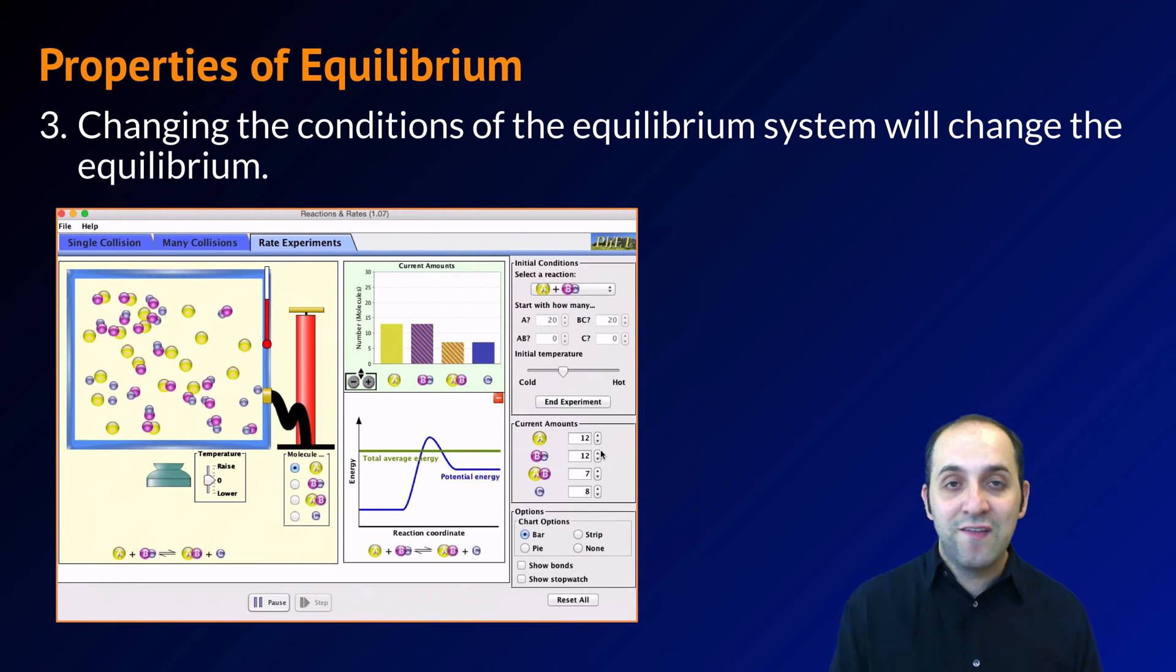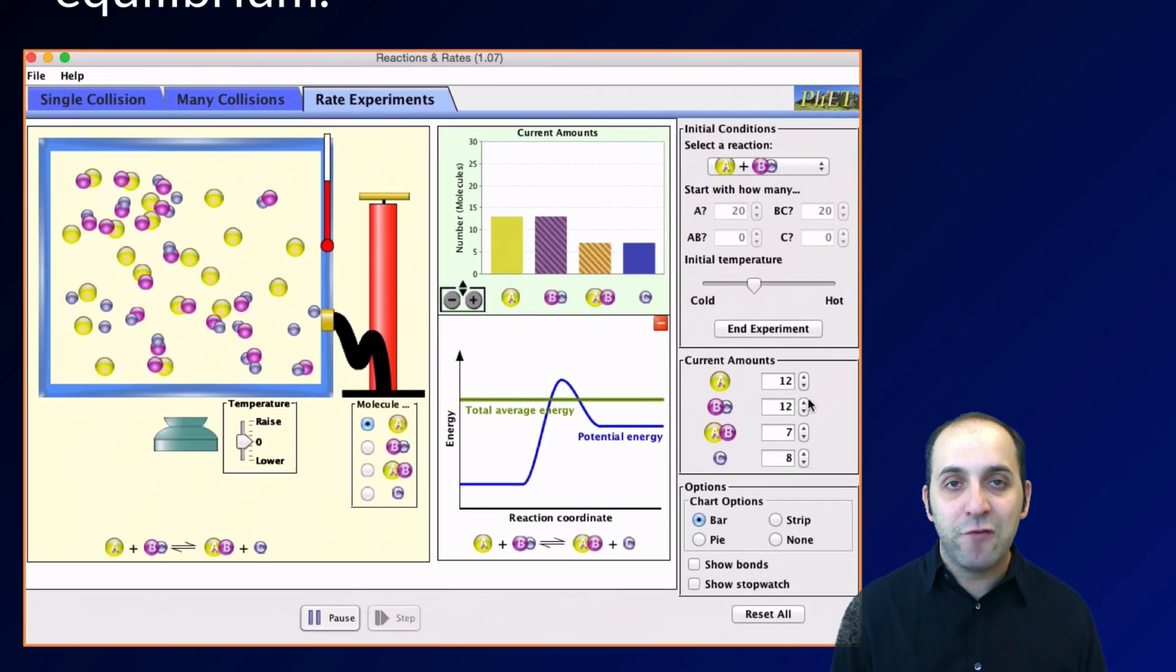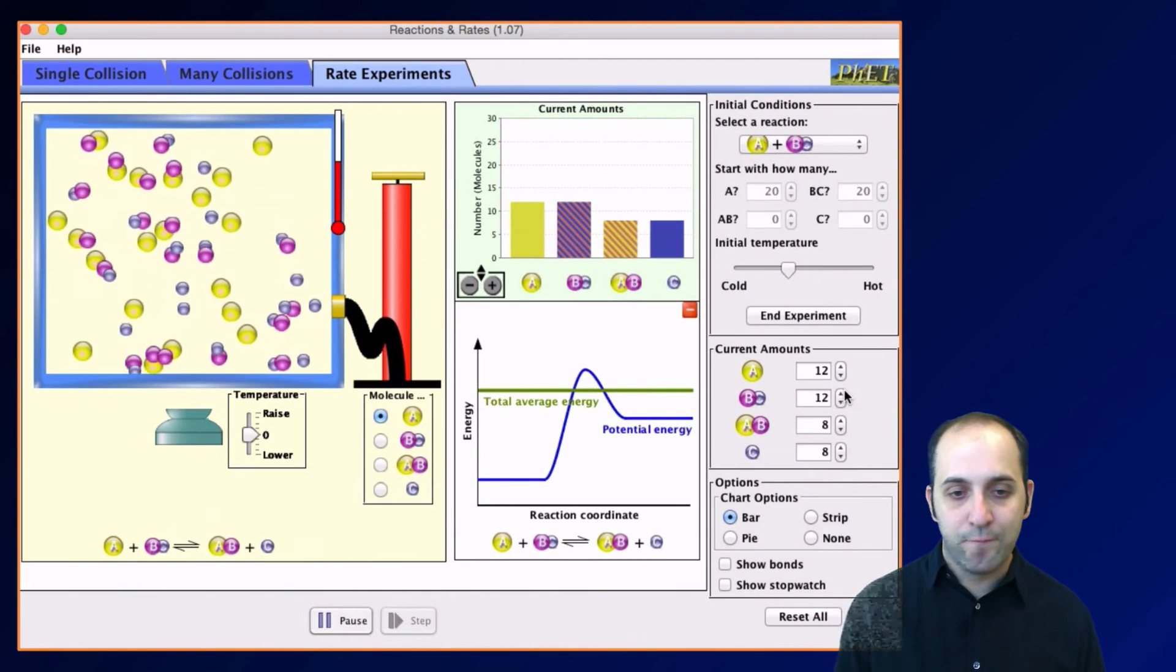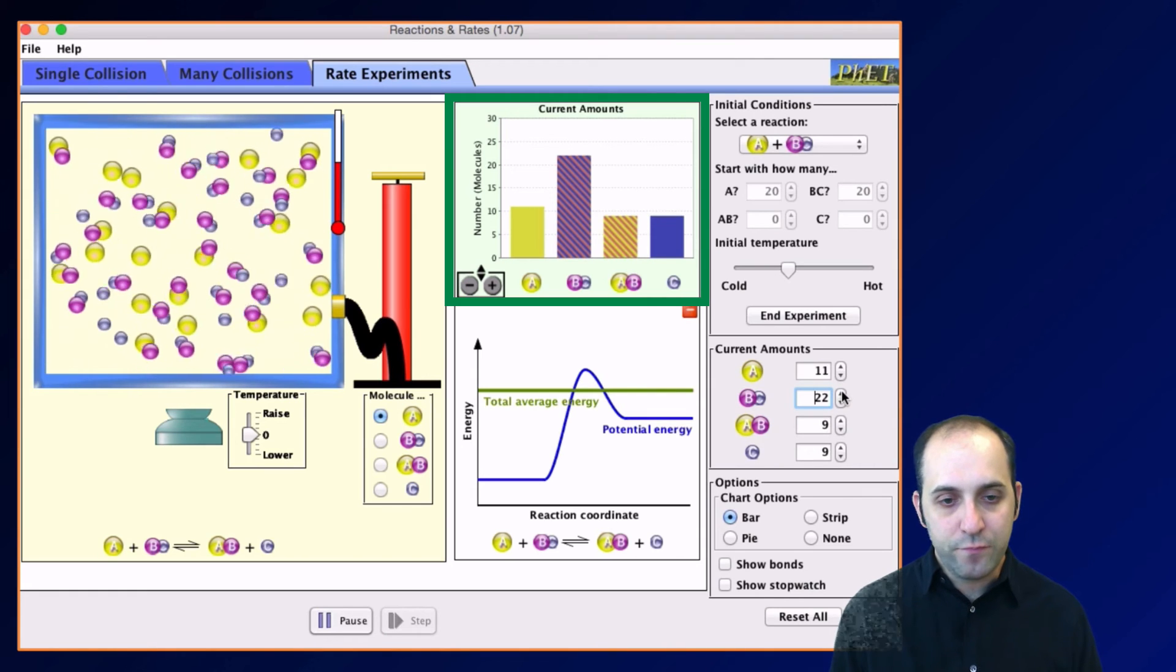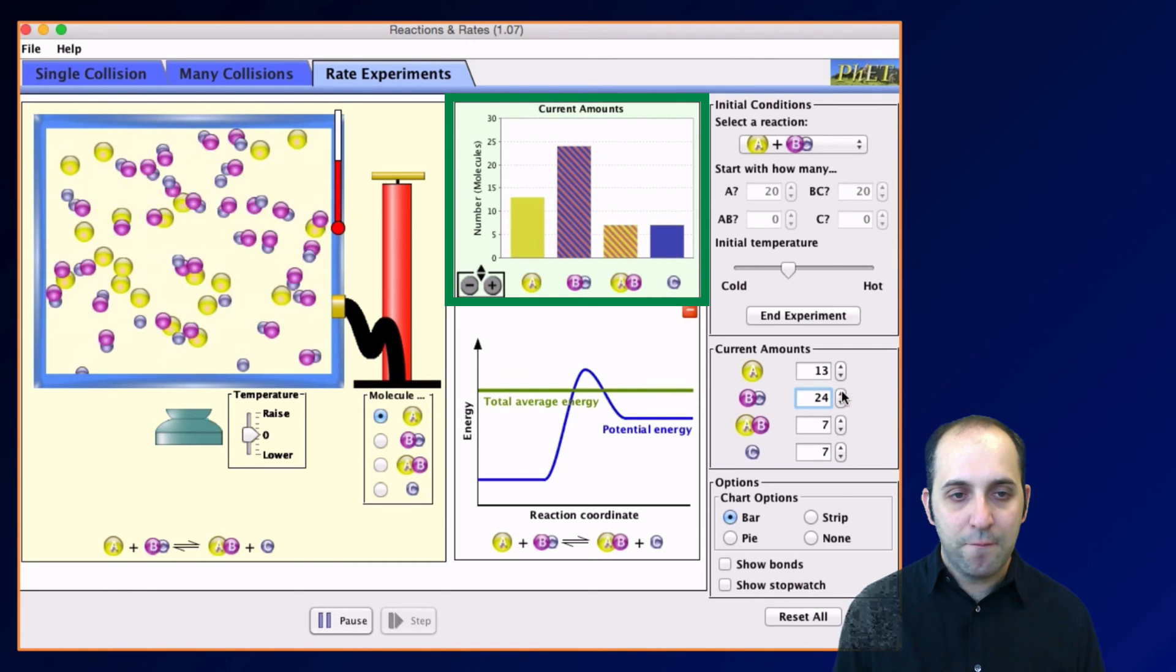Our third property of equilibrium is that if you change the conditions of the equilibrium, that will change the equilibrium. What we're going to see in this simulation is an increase in the amount of one of the molecules in the equilibrium, and you'll see that that affects the overall numbers of each of the molecules in the equilibrium after that increase is accomplished. Let's take a look. You can see that we're increasing the amount of BC and now we're going to leave it.